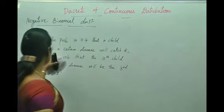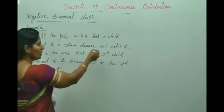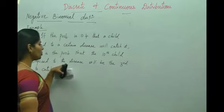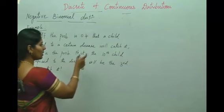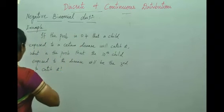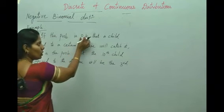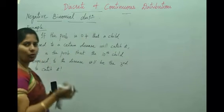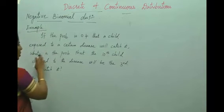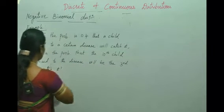The question states: if the probability is 0.4 that a child exposed to a certain disease will catch it, what is the probability that the 10th child exposed to the disease will be the third to catch it? They have given the probability of success p = 0.4, and from that we can find q using the condition p + q = 1.